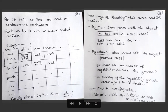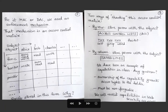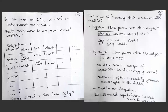The access control matrix is a simple two-dimensional data structure. Each column represents a subject — Alice, Bob, Charles, and so on. Each row represents an object or resource in the system — foo.c, bar.txt, the printer, and various other resources whose access must be monitored. The entries in the matrix are the kinds of access that a subject is allowed on a particular object or resource.